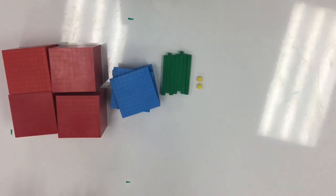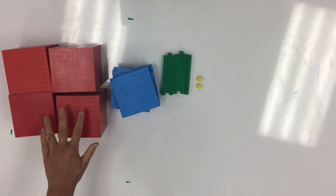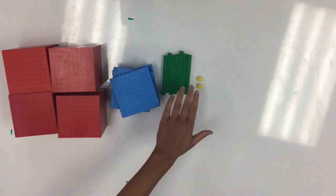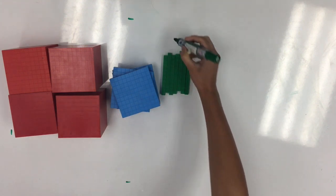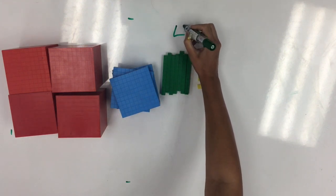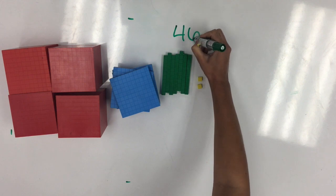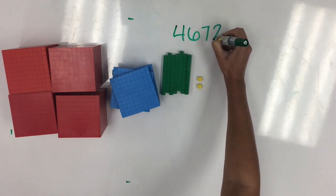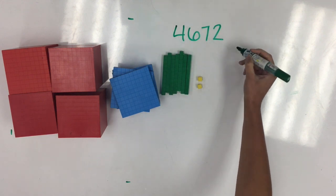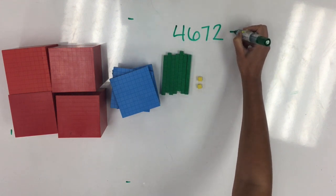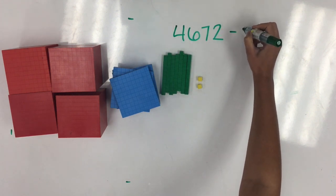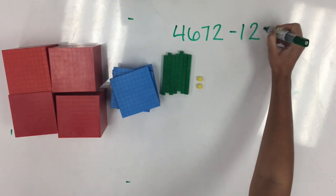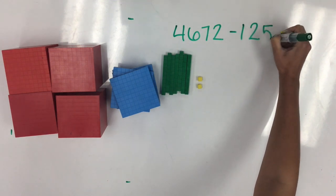I have 4,672, and I want to subtract 1,251.